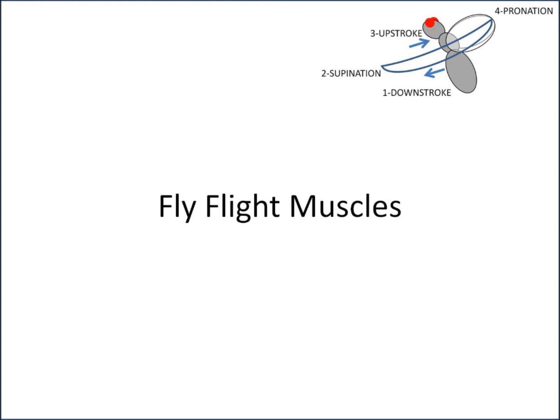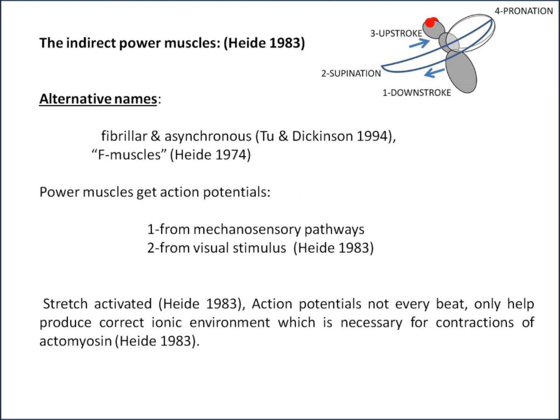So you can initiate turns, for instance. I'll talk about the indirect power muscles first and then come on to the steering muscles. The power muscles are also known as the fibrillar or asynchronous or F muscles, and they get inputs in the form of action potentials from both the mechanosensory pathways and from visual descending neurons.